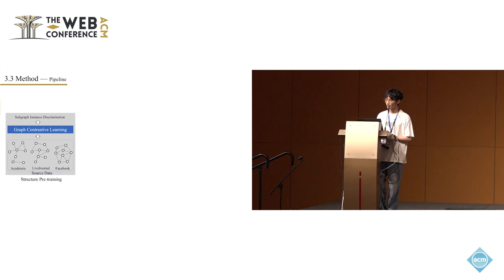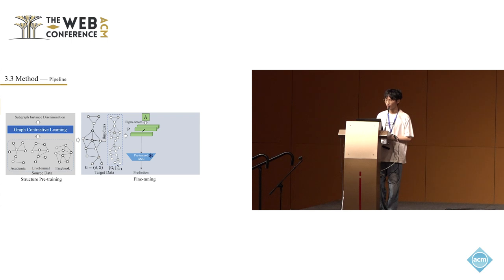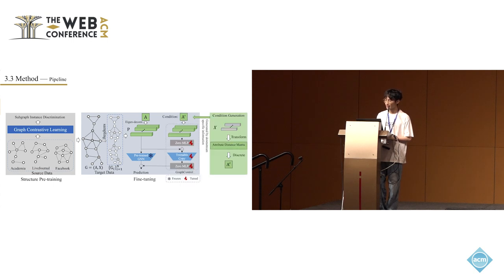The diagram illustrates the full pipeline. First, we train our model on a large amount of source data using a pre-training method focused on structural information. Then, for target data that includes important node attributes, we input structural information into the frozen pre-trained model and feed the well-designed conditions into the trainable copy. These components are linked through zero-initialized MLPs, which gradually expand parameters from zero to incorporate variable downstream attributes and safeguard against detrimental noise during fine-tuning.